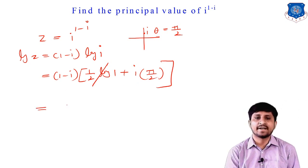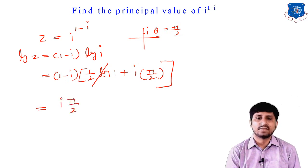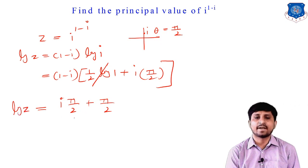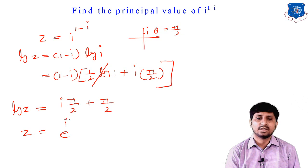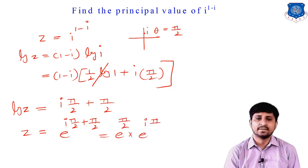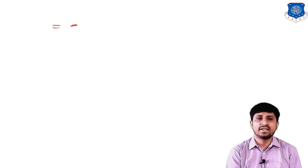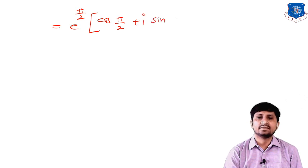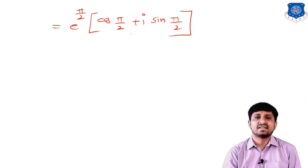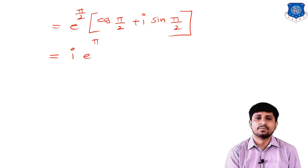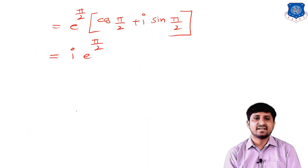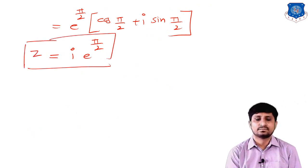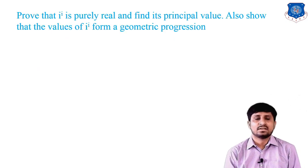So log i = i·π/2, and log 1 = 0. Then (1-i)·(i·π/2): multiplying out gives i·π/2 - i²·π/2 = i·π/2 + π/2. So log z = π/2 + iπ/2, meaning z = e^(π/2 + iπ/2) = e^(π/2)·e^(iπ/2). Since e^(iπ/2) = cos(π/2) + i·sin(π/2) = i, the final answer is z = i·e^(π/2).